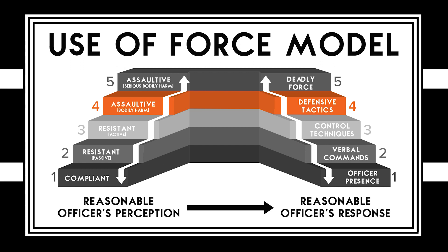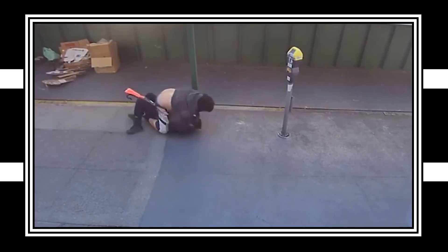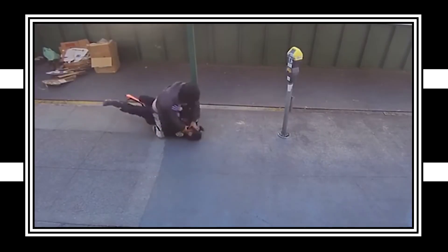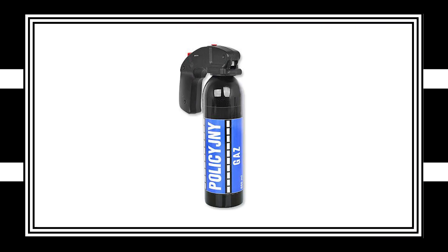Level four is where defensive tactics might come in. At this point, the subject has now turned into an attacker trying to fight — they're trying to kick and punch. The officer can respond in the same manner; they can kick and punch and fight their way out of the situation, trying to defeat the attacker. They can also use tools like taser, pepper spray, and depending on the agency, this is where a baton might come in.